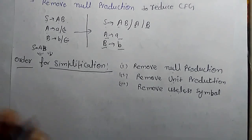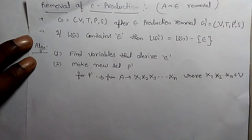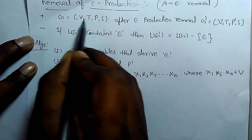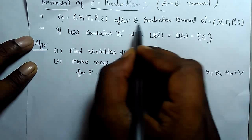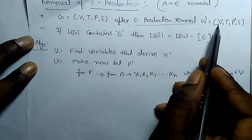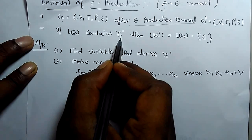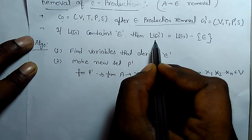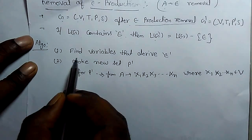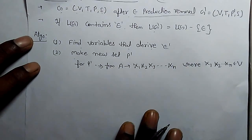Now we will see how we can remove null production. There are simple tricks but you have to concentrate. If there is a grammar G containing variables, terminals, productions and start symbol, after null production removal we get a new grammar G dash that also contains V, T but with new productions P dash and start symbol S. If the language L(G) contains epsilon, we will find a new language L(G dash) which does not contain epsilon. The method is: find variables that derive epsilon and make a new set of productions P dash.